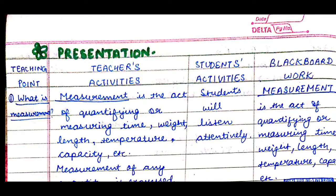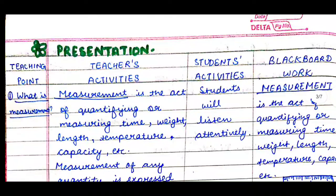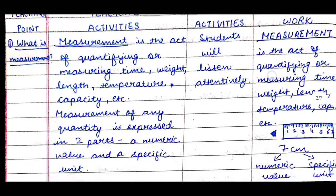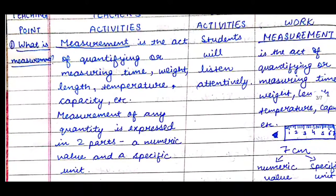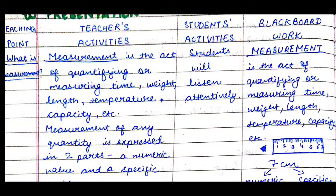For the presentation part, we make four columns: teaching point, teacher's activities, student's activities, and blackboard work. The first teaching point is 'What is measurement?' The teacher will explain the definition of measurement. Measurement is the act of quantifying or measuring time, weight, length, temperature, capacity, etc. Measurement of any quantity is expressed in two parts: a numeric value and a specific unit. Students will listen attentively, and on the blackboard we'll write the heading 'Measurement.'